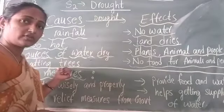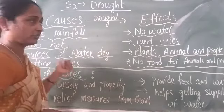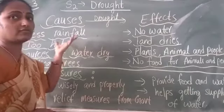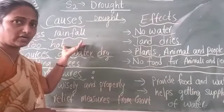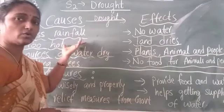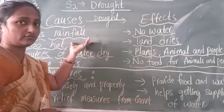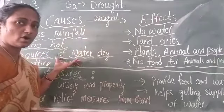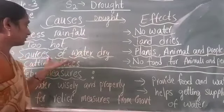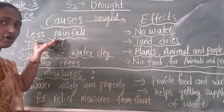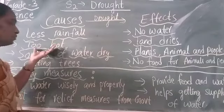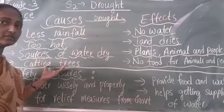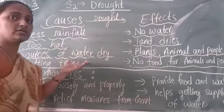When we cut off trees, there will be no rainfall. When there are no trees and no rainfall for a long time, there will be no water for any use, which leads to drought. So the major causes of drought are: low rainfall, too-hot temperatures, sources of water drying up, and cutting of trees.